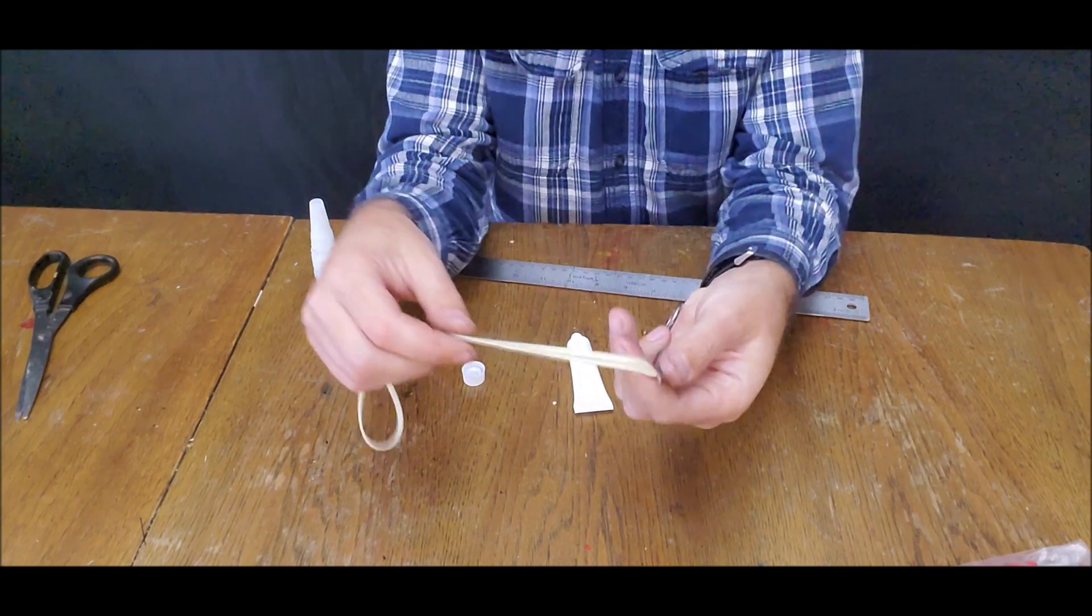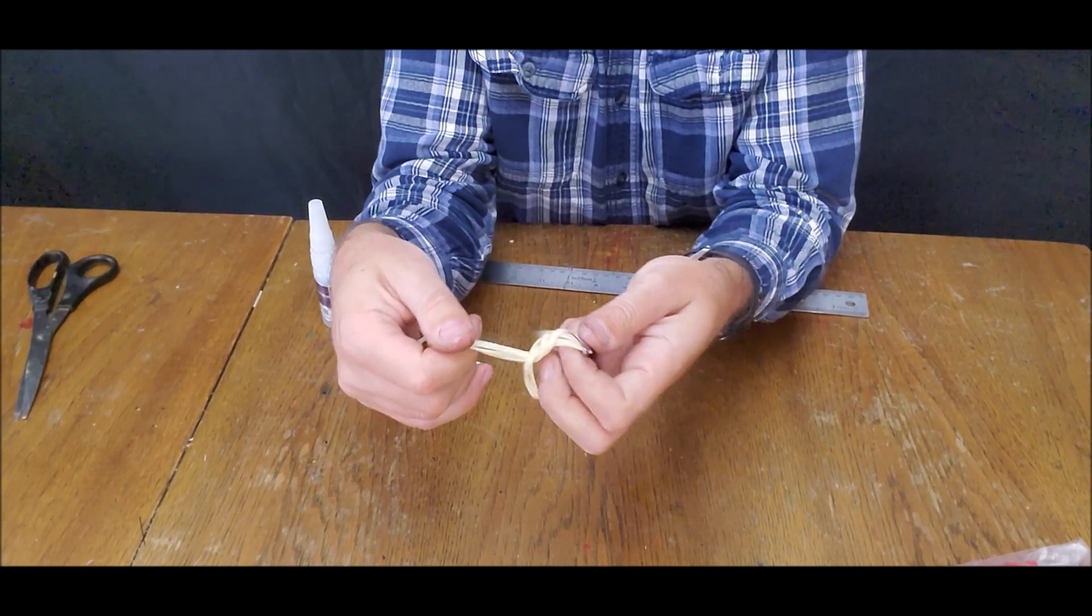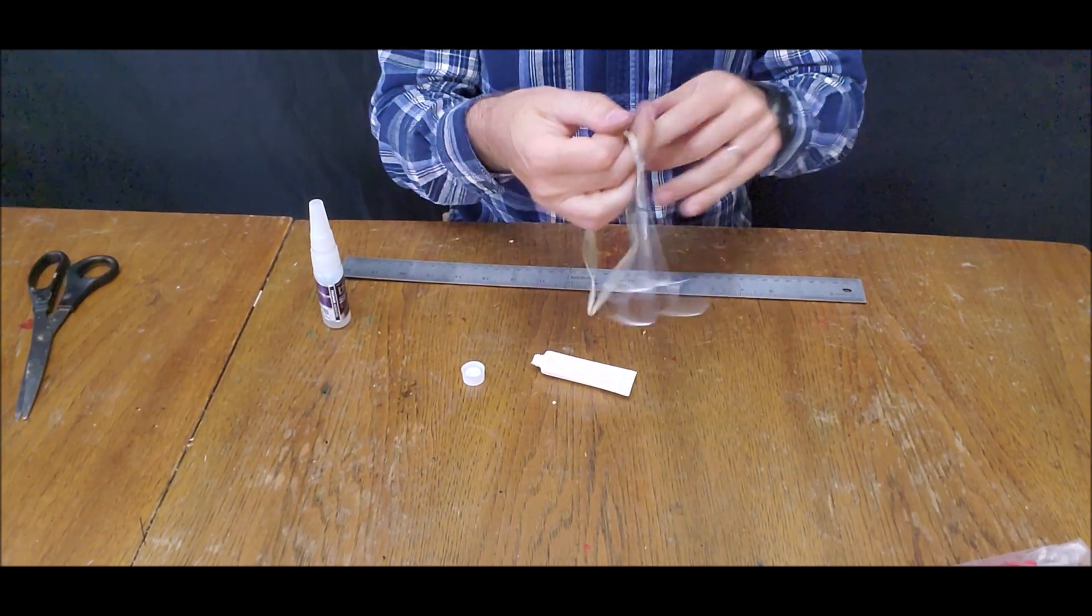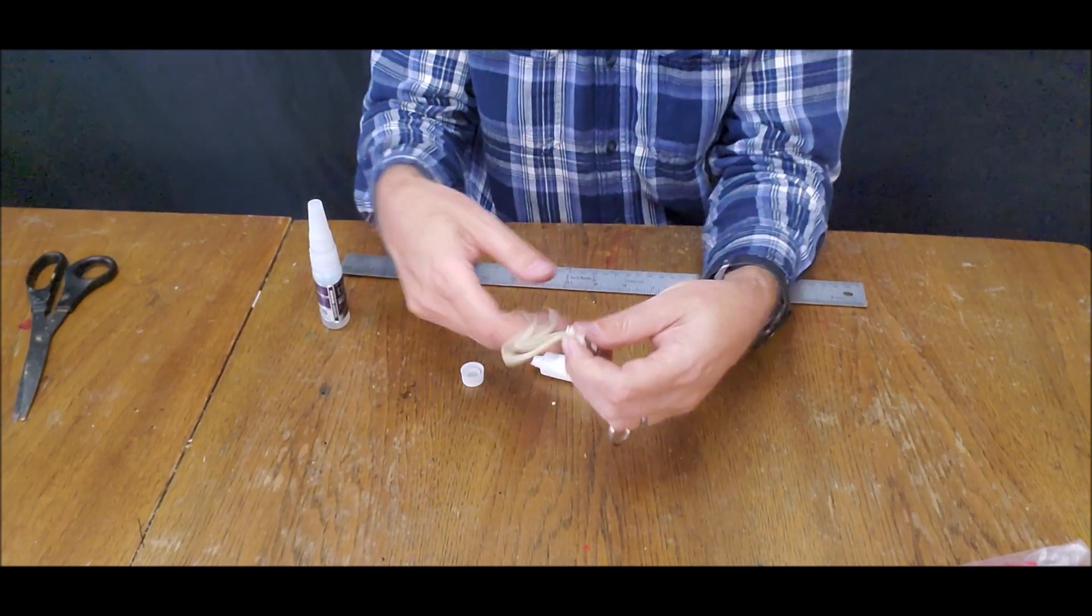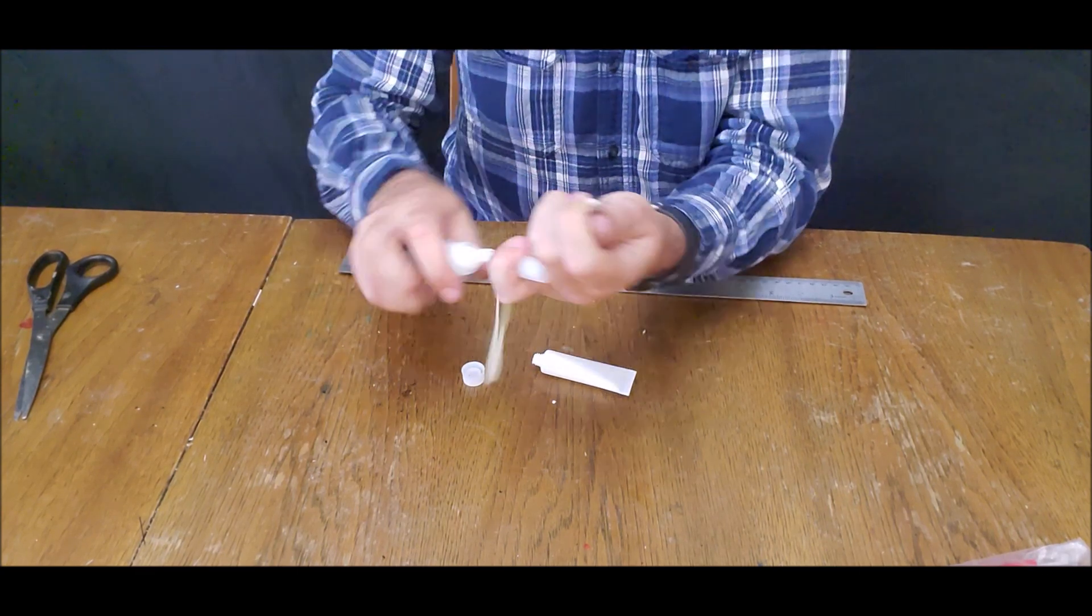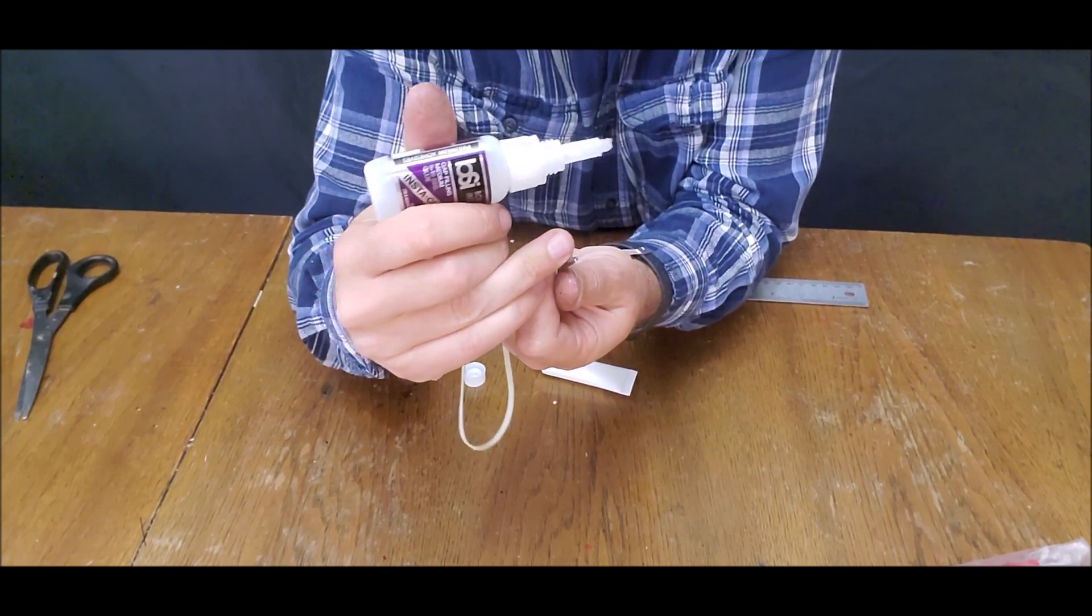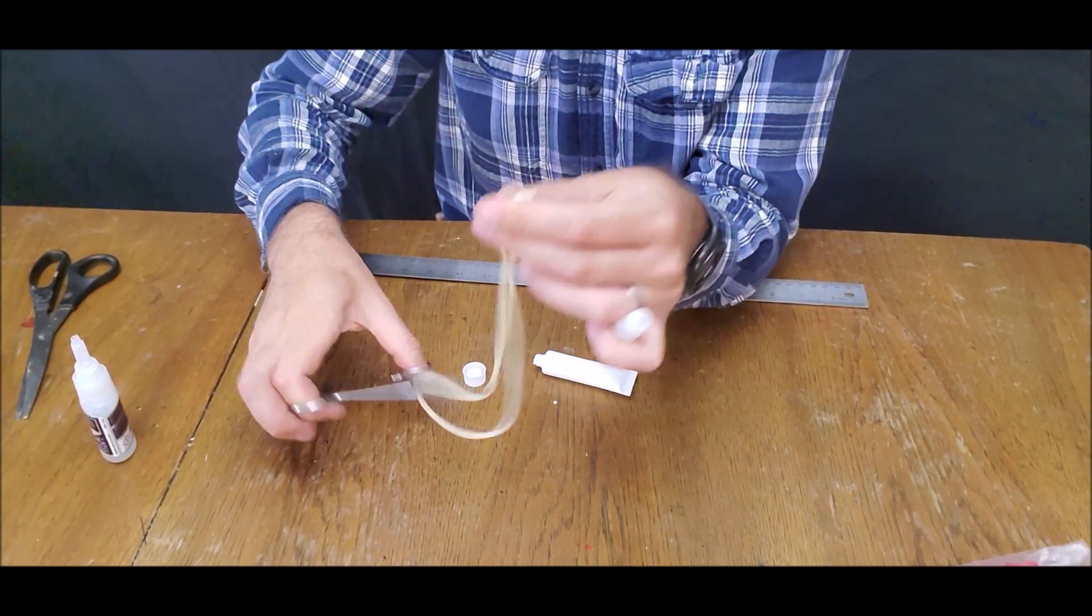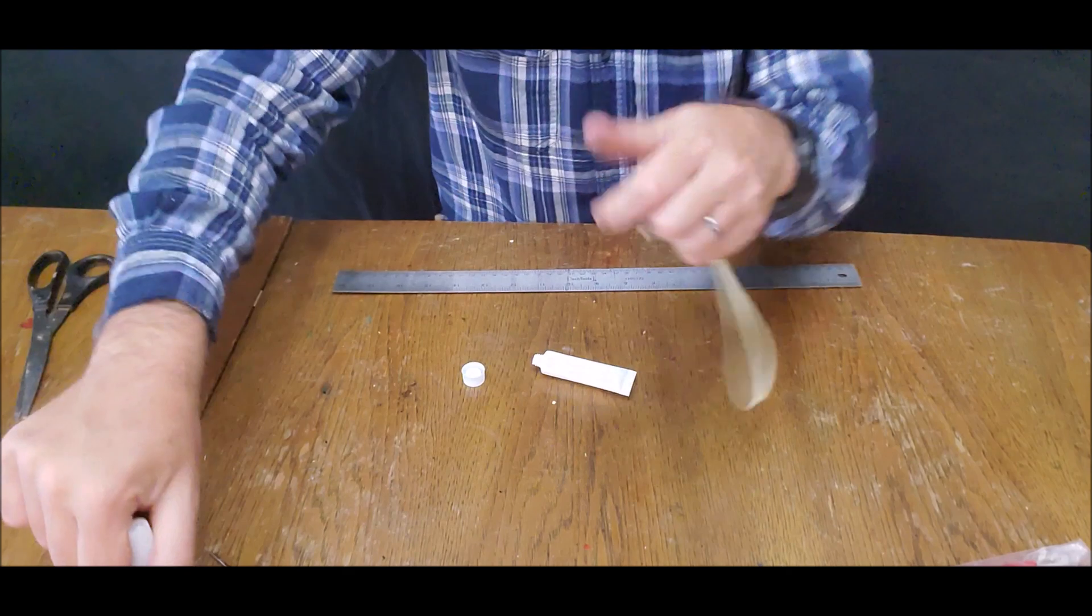We tie one knot, and I'll do this slowly. Form a loop and pull the rubber through that loop and tie this off. Then we can do the same thing a second time. Now pulling this all tight, put a tiny dab of glue on the very first knot that we tied. Just like that.